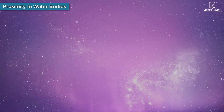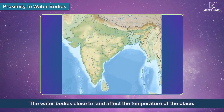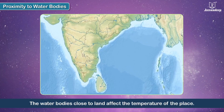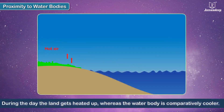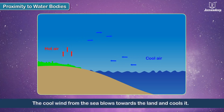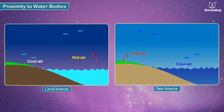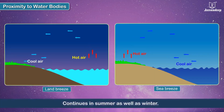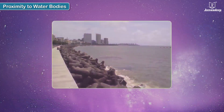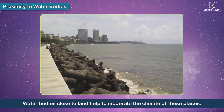Proximity to water bodies: water bodies close to land affect the temperature of a place. During the day, the land gets heated up whereas the water body is comparatively cooler, and the cool wind from the sea blows towards the land and cools it. At night, the land loses its heat while the water body remains warm, causing cool wind from land to blow towards the sea. This circulation of land breeze and sea breeze continues in summer as well as winter, helping to moderate the climate of these places.